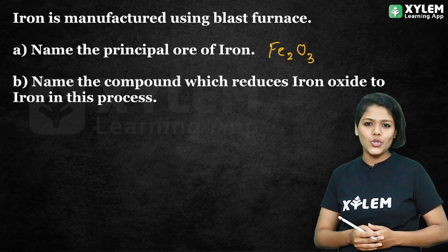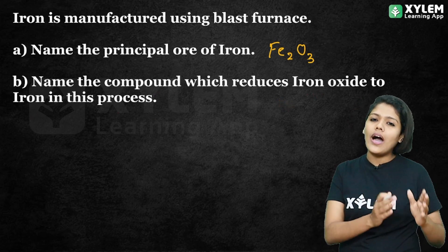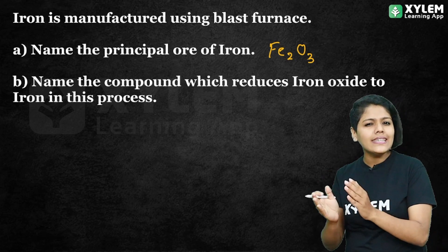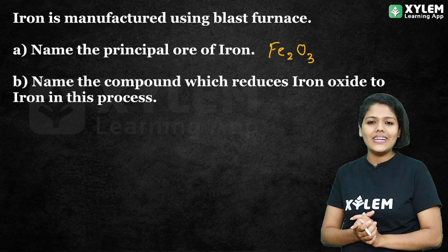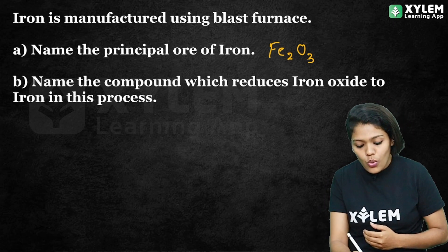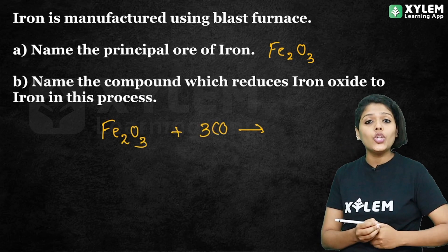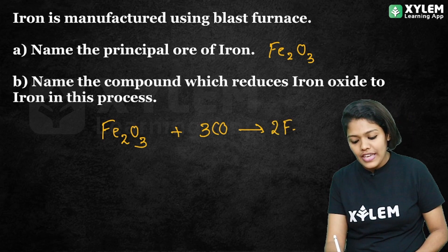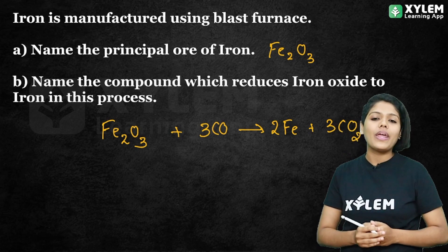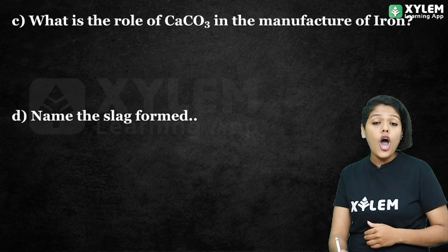Option A: Which reduces iron oxide to iron in this process? Iron oxide is called hematite. The hematite is reduced by carbon monoxide. The equation is: Fe2O3 + 3CO gives 2Fe + 3CO2. This equation is very important.